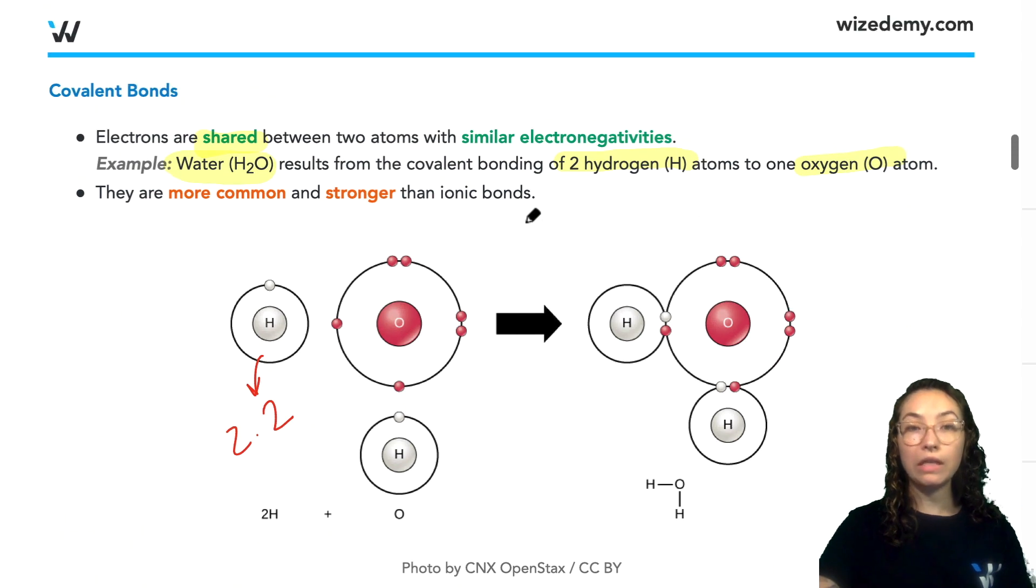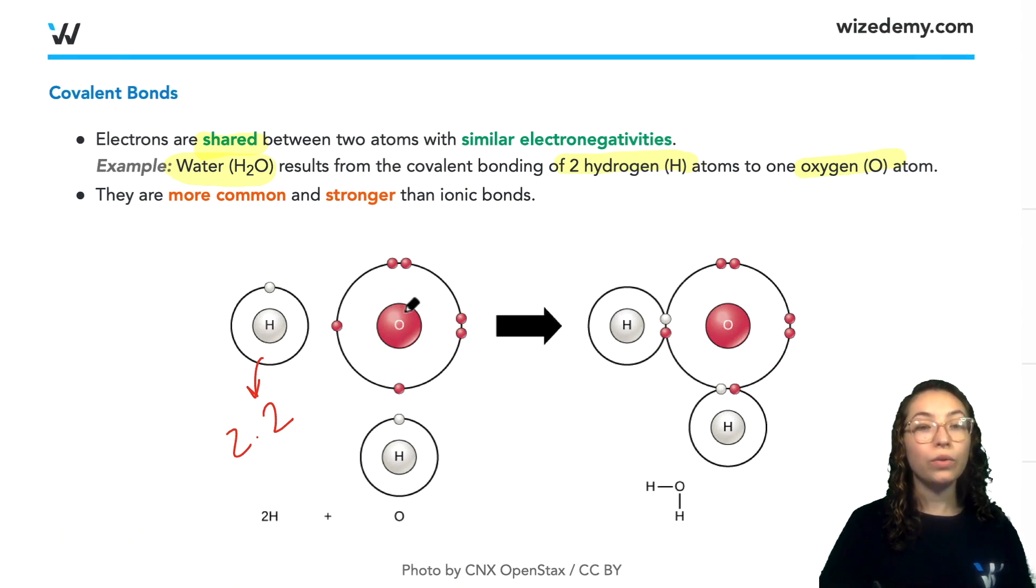So these electronegativities are considered close enough so that when hydrogen and oxygen interact, the electrons that used to belong to each individual atom now are shared equally or almost equally between each other.